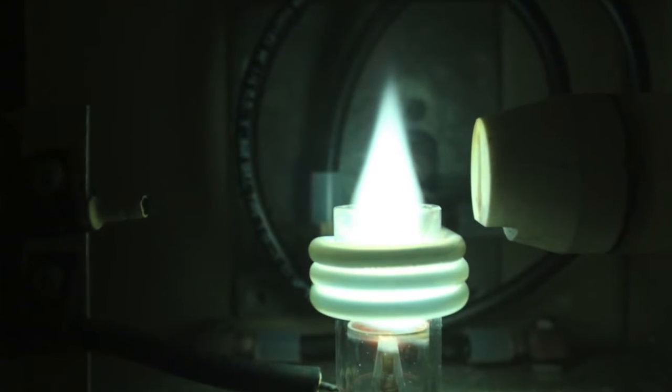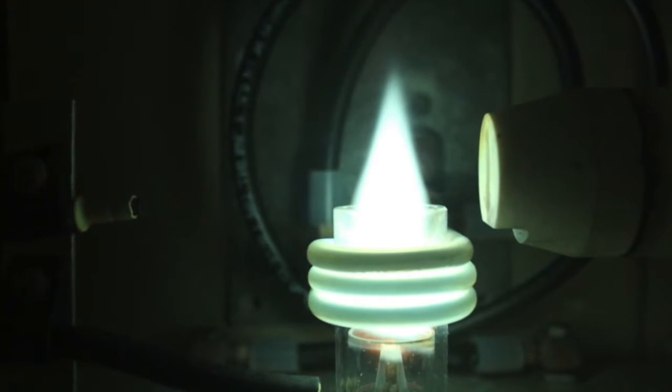Now the torch assembly breaks down the water sample into atoms. It accomplishes this through argon plasma. What is plasma, you ask? Well, plasma is a gas that has been heated to extremely high temperatures, approximately 12,000 degrees Fahrenheit, at which point electrons fly off the atoms.